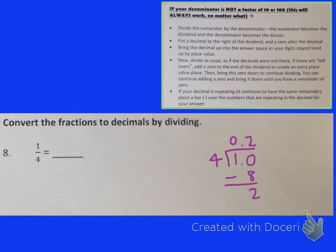And now I have a remainder of 2, but I don't want a remainder. That's not good. So I'm going to put another zero here, and I'm going to bring it down. How many times does 4 go into 20? It goes in 5 times. So I'm going to put a 5 up here. 4 times 5 is 20. So now I have a remainder of 0, which is exactly what I want. So 1 fourth is the same thing as 25 hundredths, or .25. Like I said, this always works.